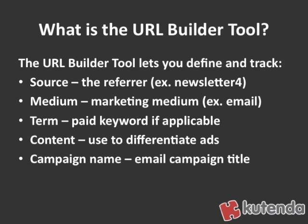The next field is term, and this is something you would use to track paid search campaigns, not so much email marketing campaigns. You can use this URL Builder tool for a number of different links — pay-per-click that's not happening in Google AdWords, websites, or different banner ad campaigns you might have. So that term field is more for paid search content and is used to differentiate ads.